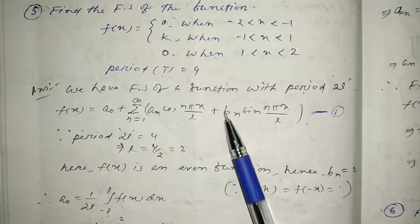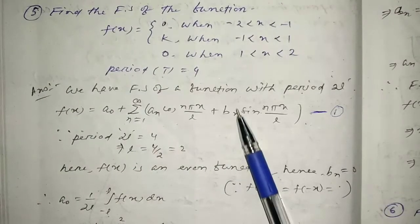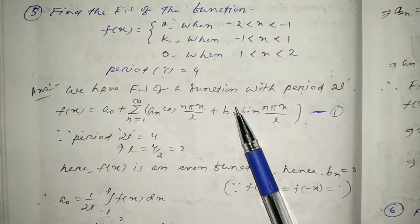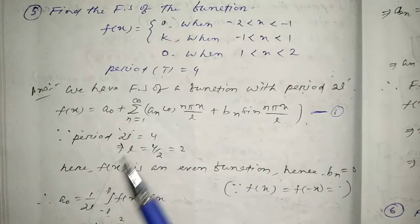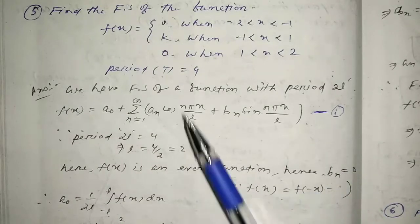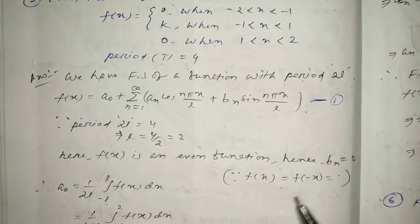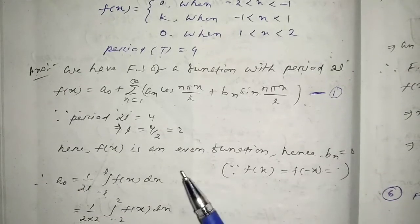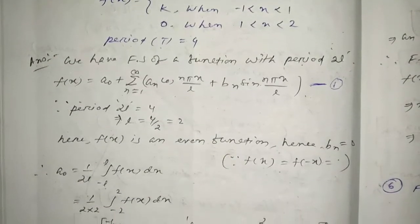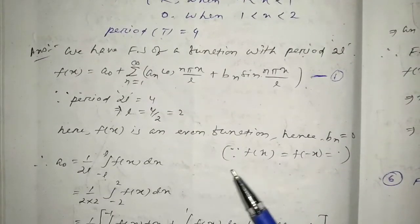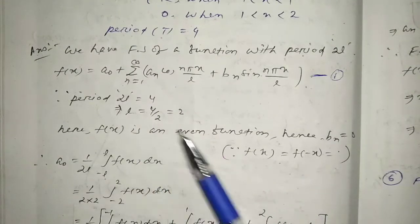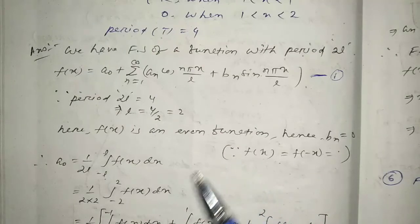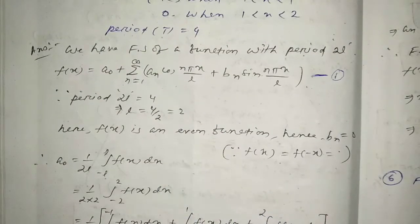Since f(x) is an even function, bn value equals 0. This is because for an even function, f(-x) equals f(x). We can confirm this holds here, so this is indeed an even function. Therefore bn = 0, and we proceed to find a0 and an.